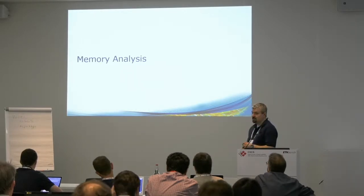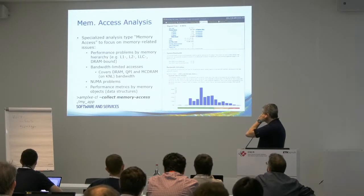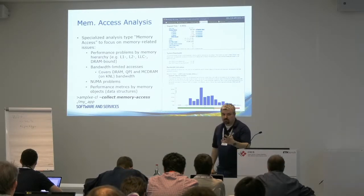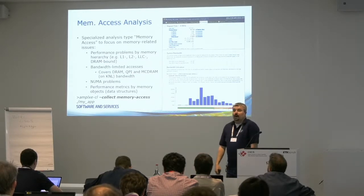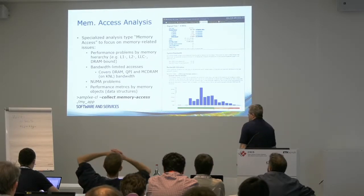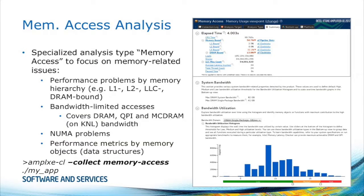Memory analysis — that's the other thing you'll likely be interested in. When you know that you're L1, L2, last level cache, or DRAM bound, you want to know why. Usually you have like 10 arrays, and the question is which one of those is actually memory bound. This is where the memory access collection comes in. This analysis looks at similar metrics as the HPC performance analysis, so it tells you roughly the same things about being L1, L2, L3, or DRAM bound, but it breaks down those numbers into loads and stores — so you can see if memory traffic is more coming from reads or writes — and it tells you average latencies for individual cache levels.